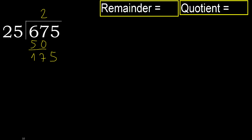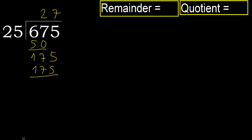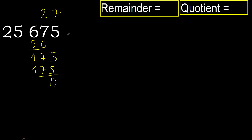175. 25 multiplied by 8 is greater; multiplied by 7 is 175, which is not greater. Okay, subtract: 0. Next — that is not a number.